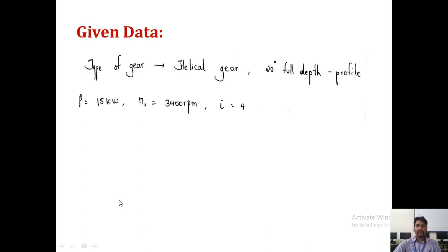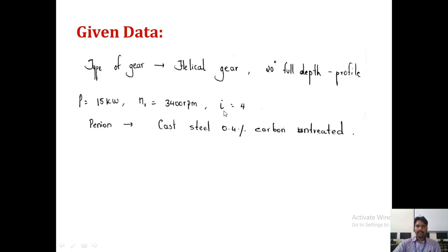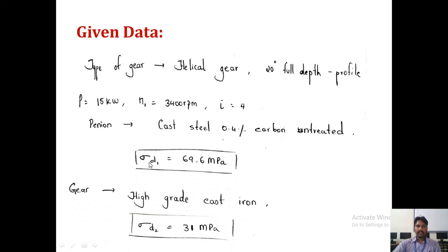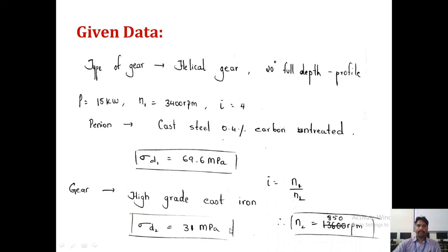Given data: helical gear with 20-degree full depth profile. Power is 15 kW, speed of pinion N1 is 3400 rpm, speed reduction ratio I is 4. Pinion material is cast steel 0.4% carbon untreated with sigma D1 = 69.6 MPa; gear material is Grade I cast iron with sigma D2 = 31 MPa. N2 is calculated as N1 divided by I, giving 3400 divided by 4 = 850 rpm.